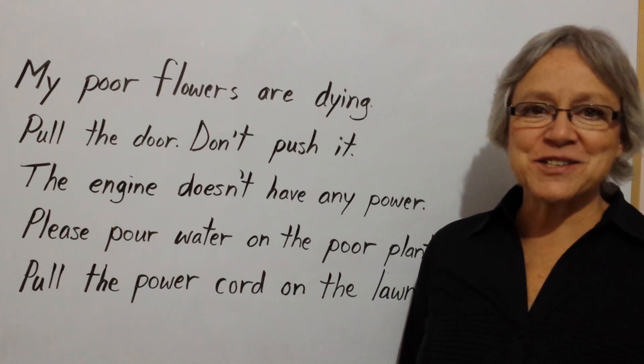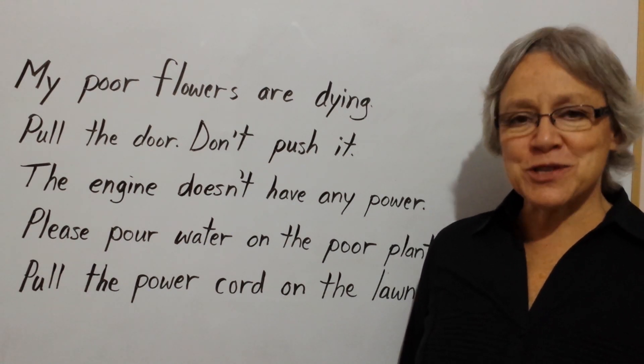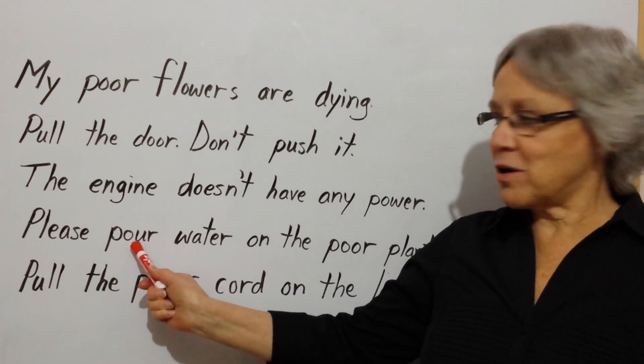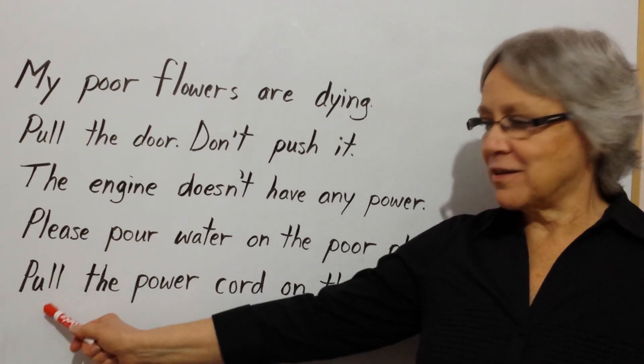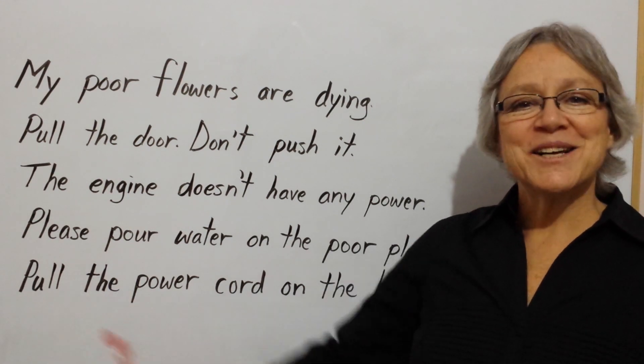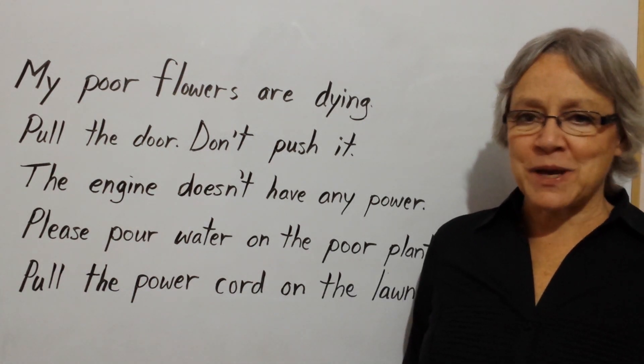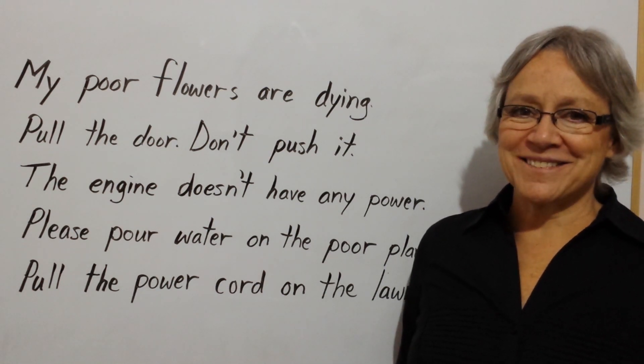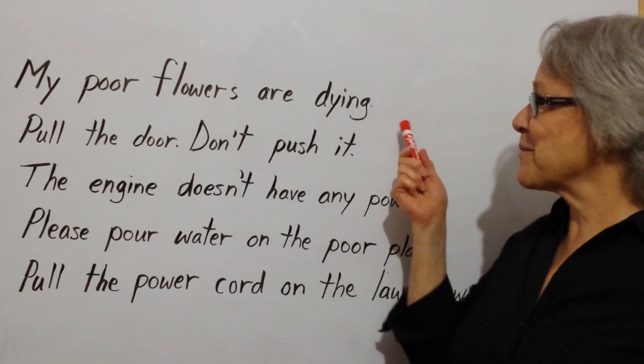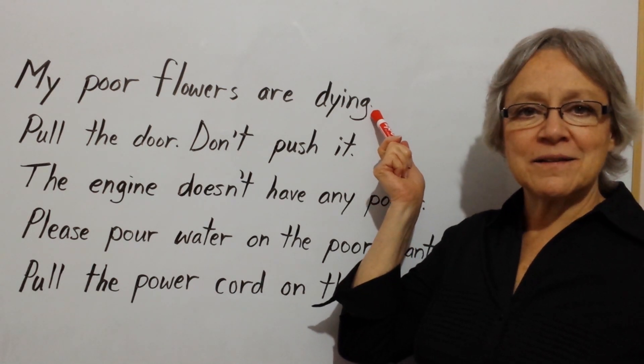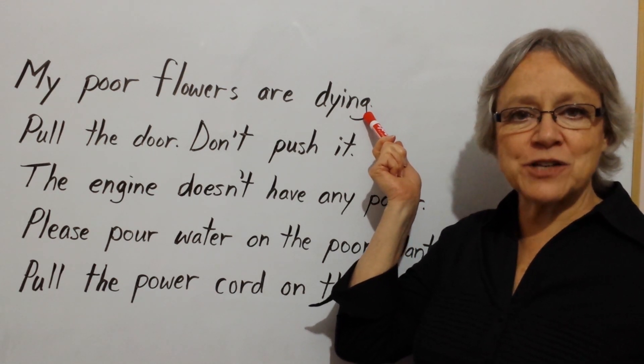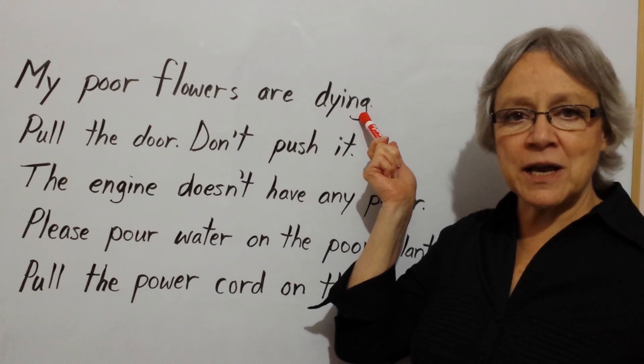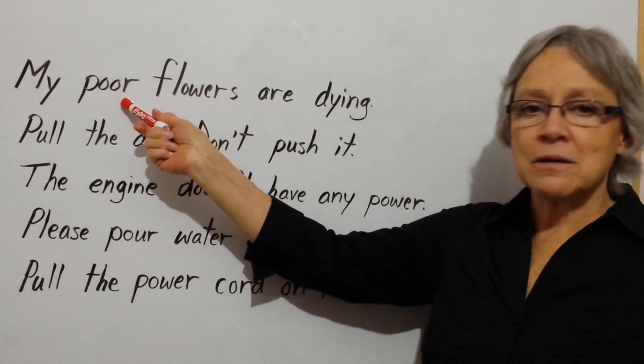Here are some sentences to practice saying with me. Using the words pour, pour, power, and pull. Please repeat these sentences after me. I'll say each sentence more than once. Here it goes. My poor flowers are dying. My poor flowers are dying. My poor flowers are dying. Poor.